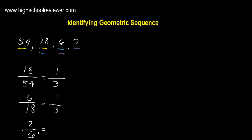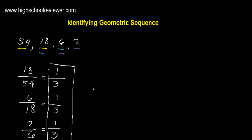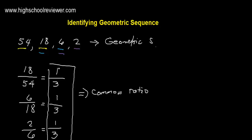For 2 over 6: 2 is common between numerator and denominator, so 2 divided by 2 is 1, and 6 divided by 2 is 3. We can see here that all the quotients are the same. Since all the quotients are the same, we can say that this is a geometric sequence. These equal quotients are called the common ratio.